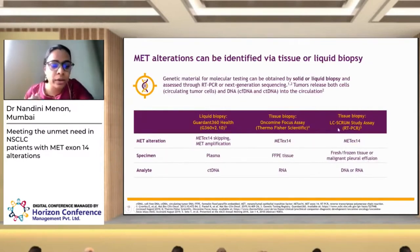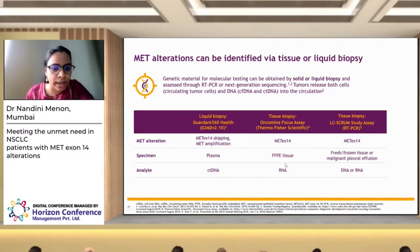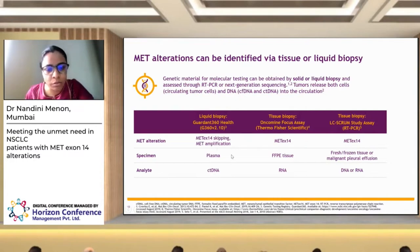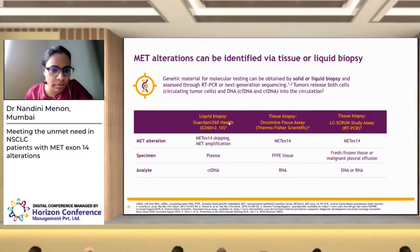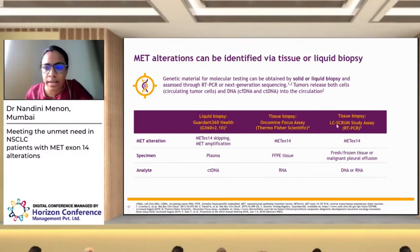Regarding MET testing in patients with non-small cell lung cancer: tissue testing is the gold standard, but MET testing can be done on both tissue and liquid biopsies. In the VISION trial for tepotinib, testing was allowed on both, including circulating DNA, RNA from tissue, or DNA/RNA from tissue biopsies. Three platforms were used: the Guardant 360 platform for liquid biopsy, the Oncomine Focus Assay for tissue biopsy allowing RNA testing on FFPE tissue, and the LC-SCRUM study assay used predominantly in Japan.